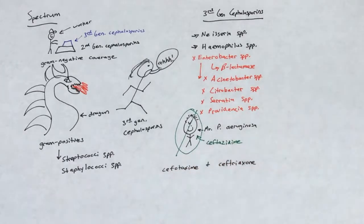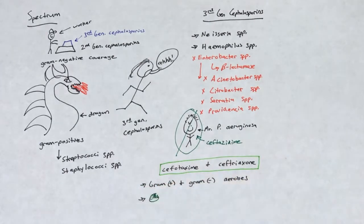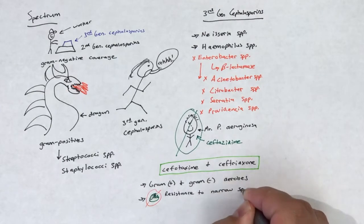Ceftotaxime and ceftriaxone have activity against most gram-negative and gram-positive aerobic bacteria. These drugs also possess resistance to several narrow-spectrum beta-lactamases, yet they have poor activity against B. fragilis.